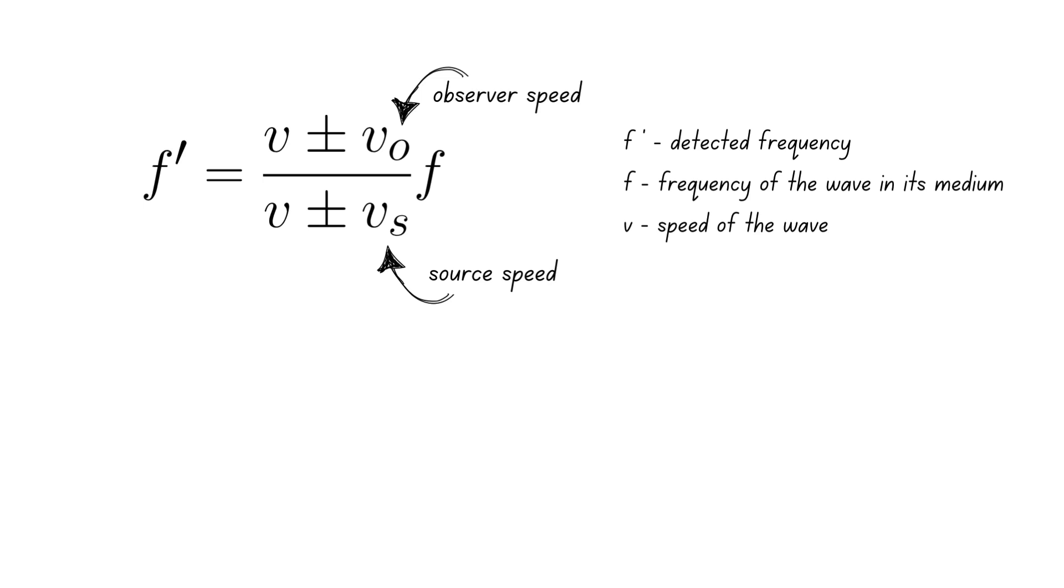For a stationary observer, the formula simplifies to this. From here, if the observer can measure the frequency of the emitted wave and knows what the true frequency should be, then this information can be used to calculate the speed of the source. This is exactly how the radar gun works.